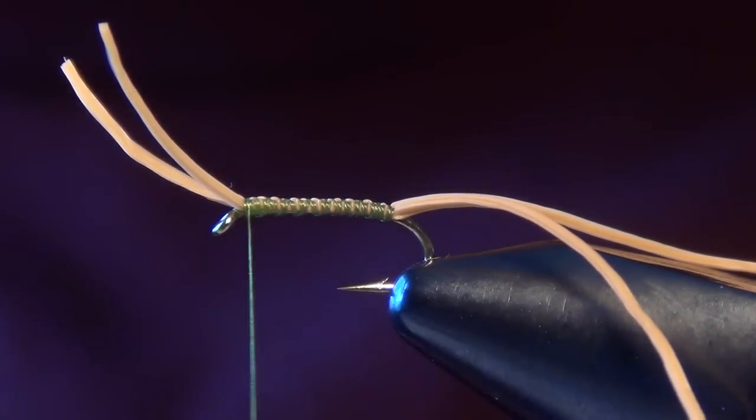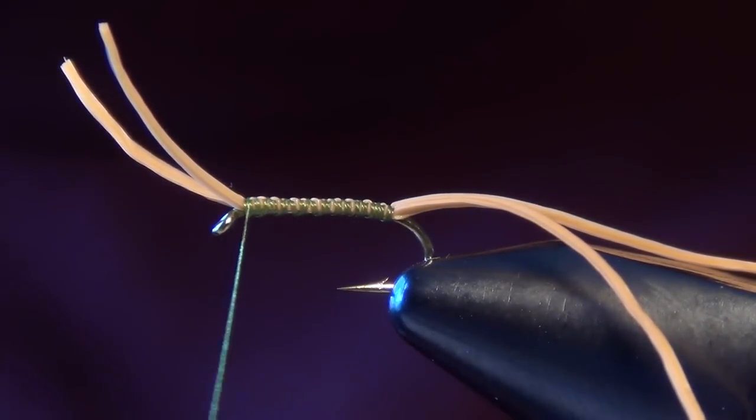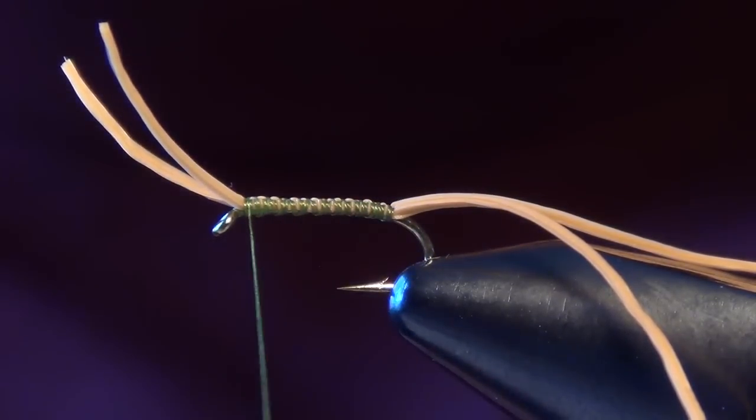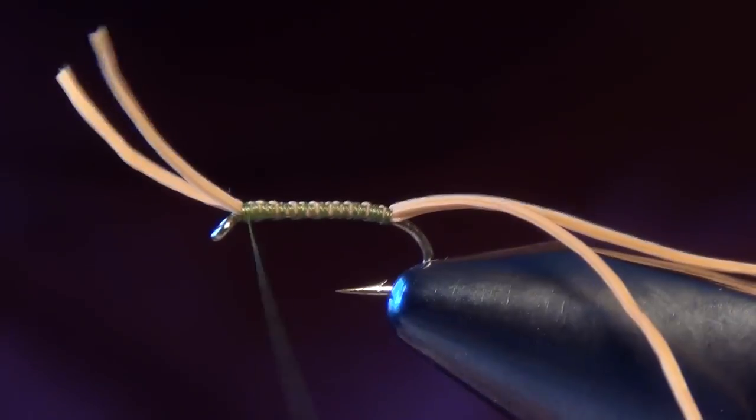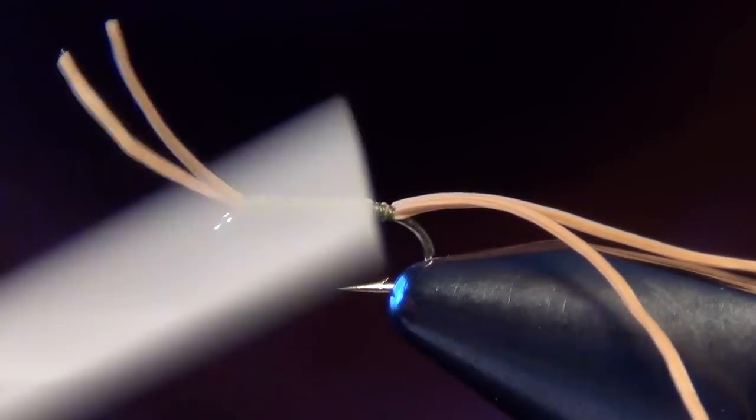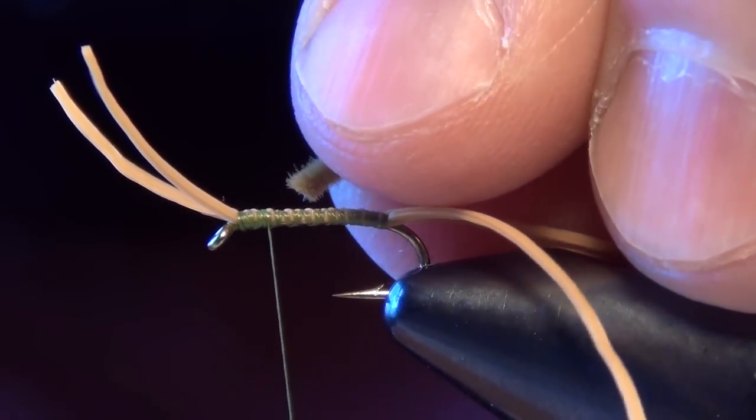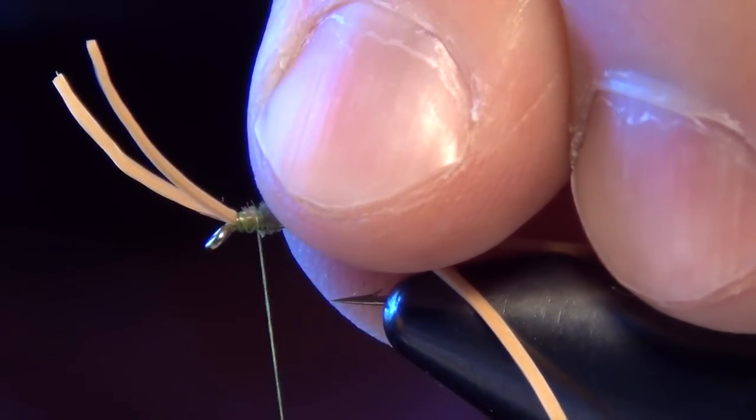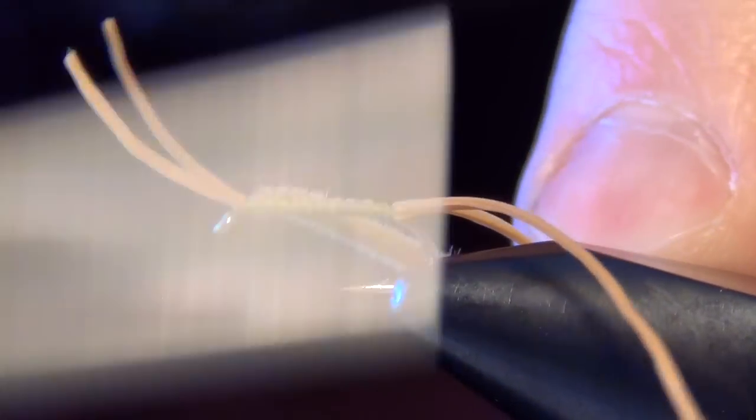Now we're ready to tie in our body material, which is just some olive brown velvet chenille in micro size. I'm going to take a few turns of thread just down the shank, about an eye's length away from the eye of the hook. I'm going to capture that chenille and tie it along the side of the fly.